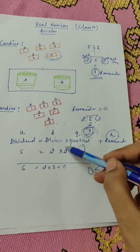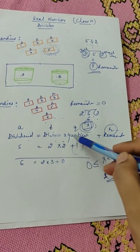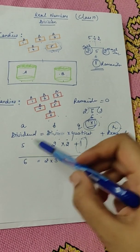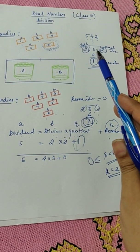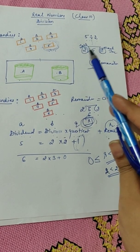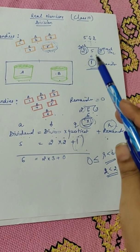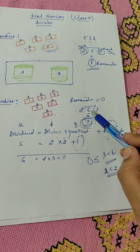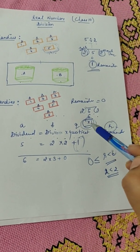It can be written mathematically as dividend is equal to divisor into quotient plus remainder, as we have done this earlier. So dividend here is your five in the first example and that is equal to two, that is divisor, into quotient two, plus the remainder one. And the second equation is six is equal to two into three plus zero.